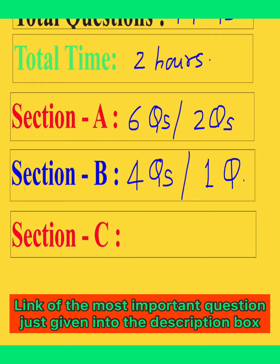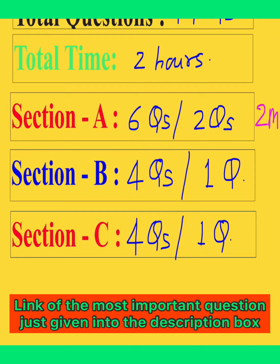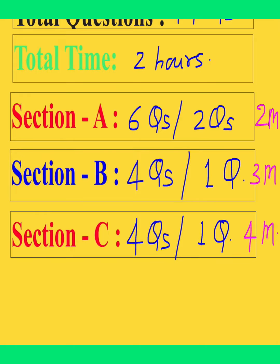In Section B, you will get a total of four questions and there is one internal choice in this section. After that, in Section C, you will also get four questions and one question as internal choice. In Section A, each question carries two marks; in Section B, each question carries three marks; and in Section C, each question carries four marks. Also, in Section C, two questions will be case study based questions.